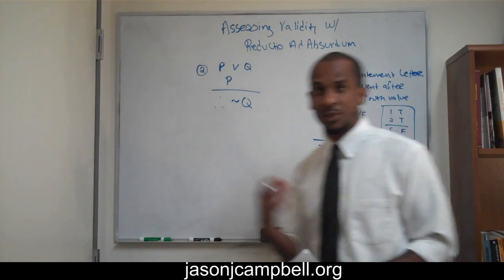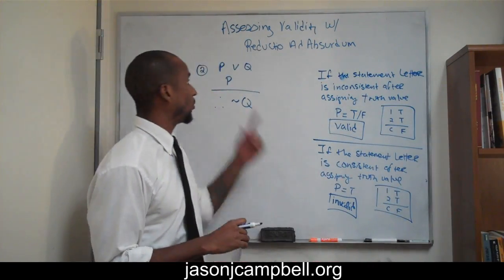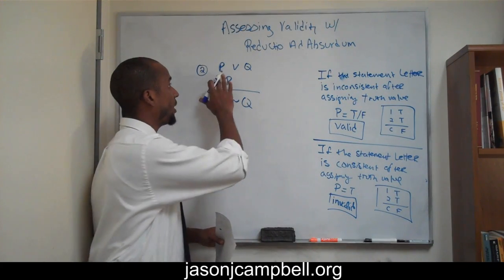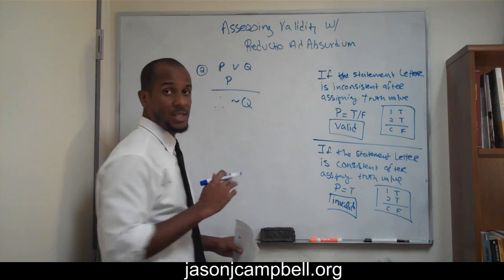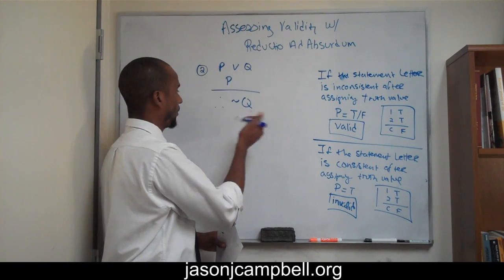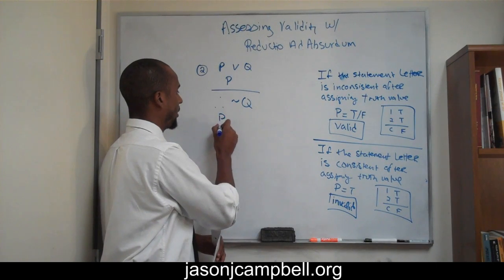Now, again, let's check the validity of this argument using reductio ad absurdum. Step one, what do we do? Step one, we list out all of our statement letters. In here, we have P and we have Q, just like before. So, we have P and we have Q.